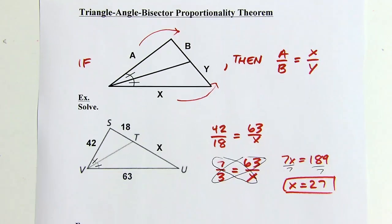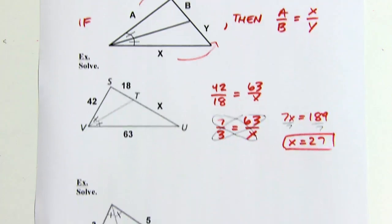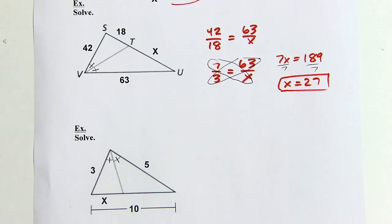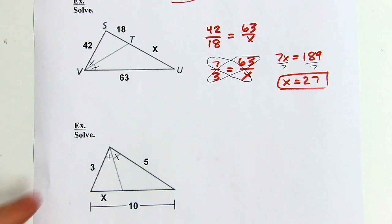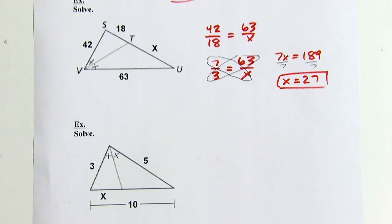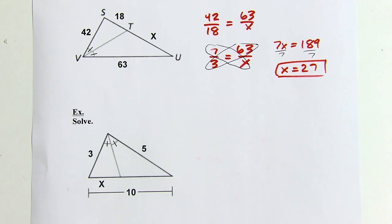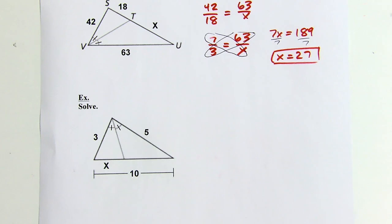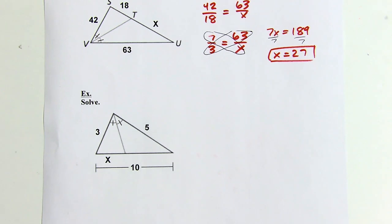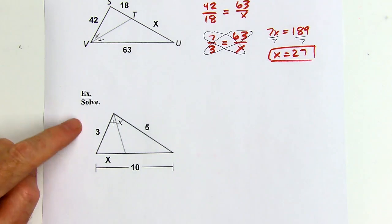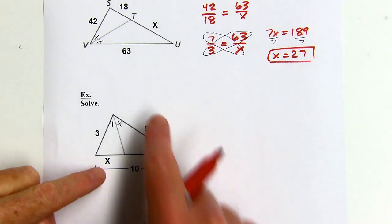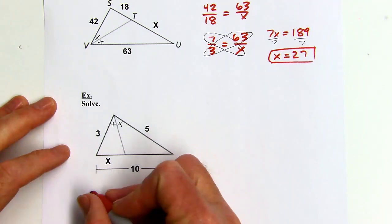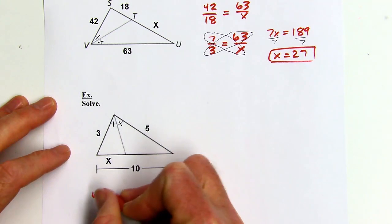This next problem is deceivingly tricky. Similar to the last example, there's an easy mistake to make. A lot of people will say 3 is to x as 5 is to 10 — but that's wrong.